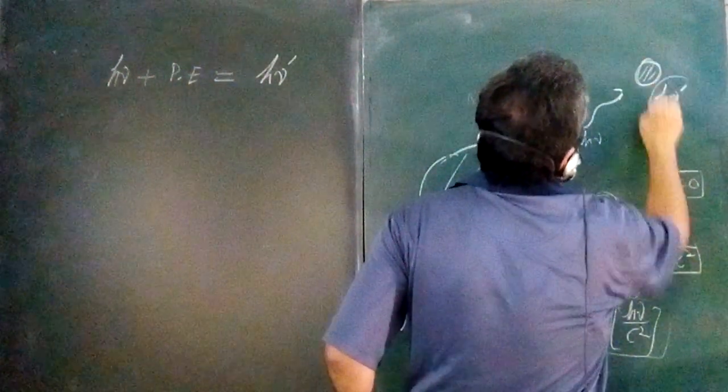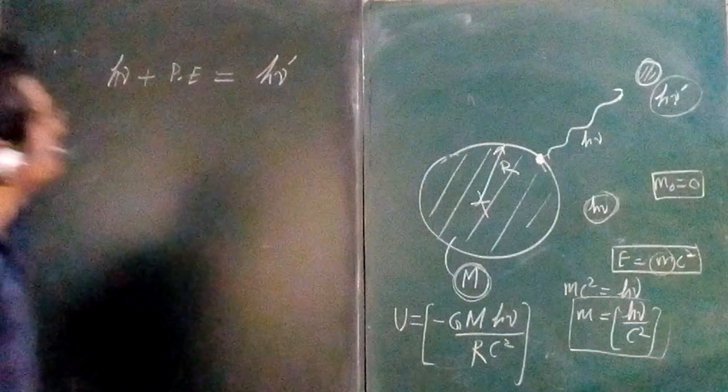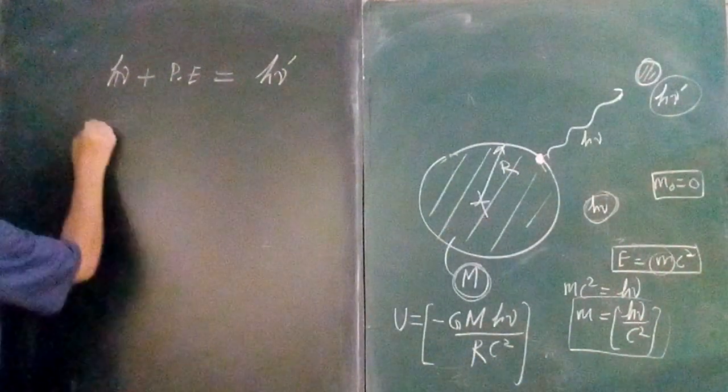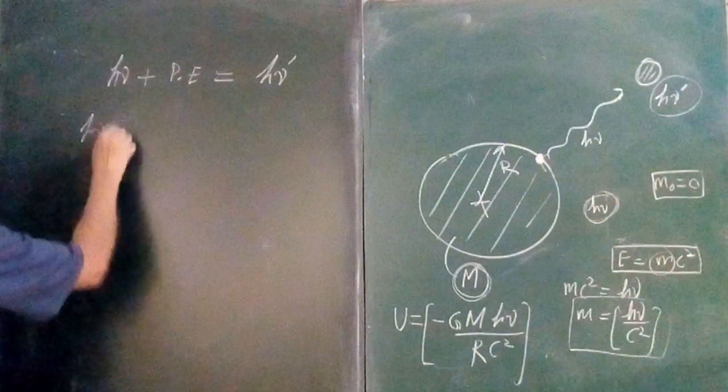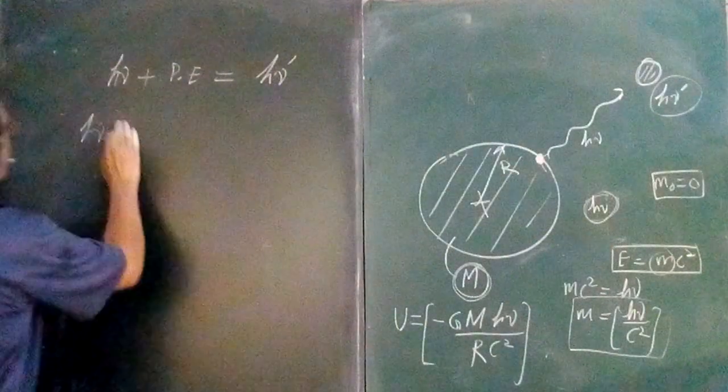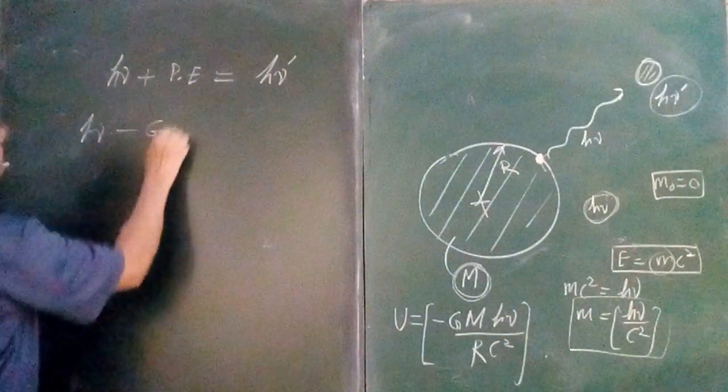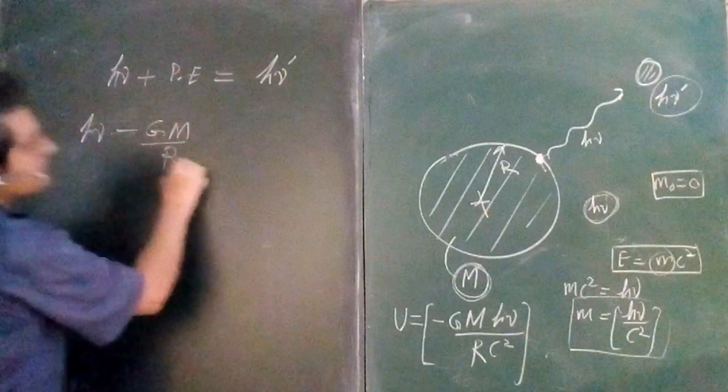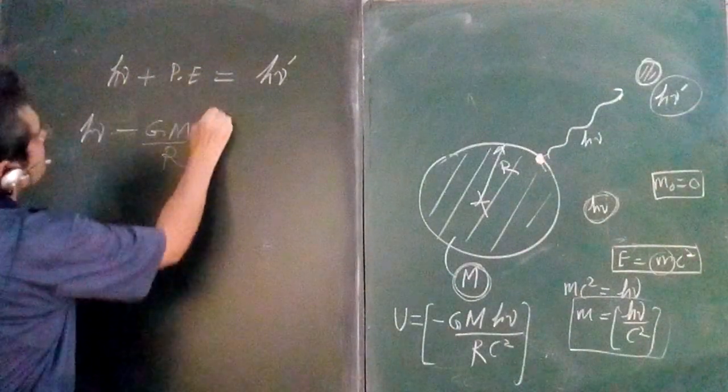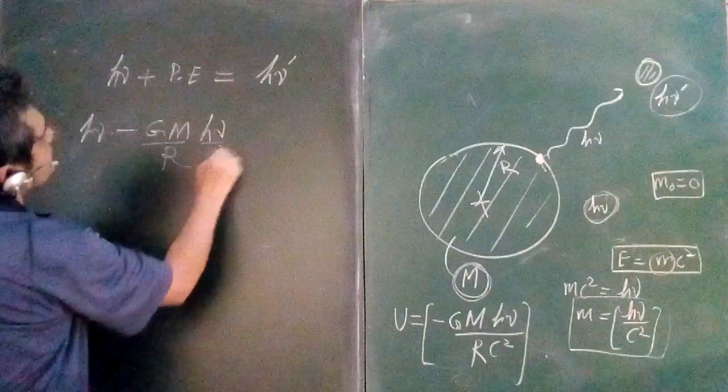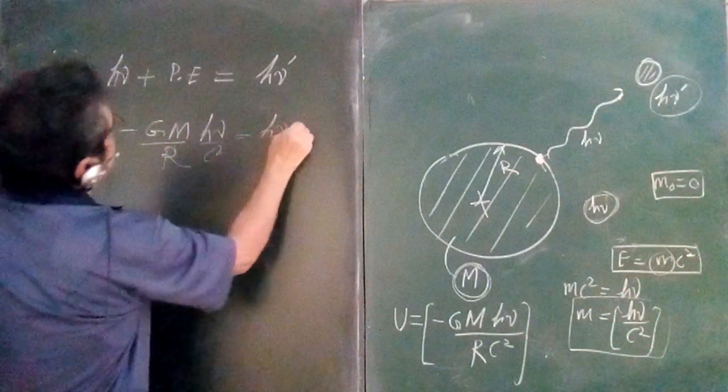I have the frequency h nu dash, so the energy is written as h nu dash. So h nu plus the potential energy is minus GM upon r h nu upon c² is equal to h nu dash.